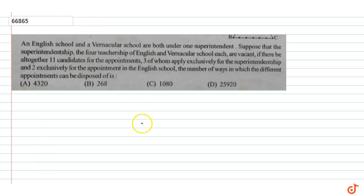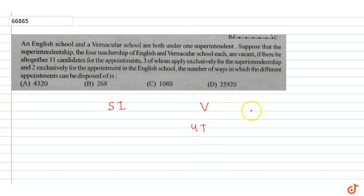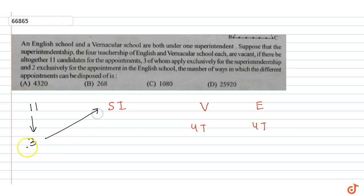So, if I can see here, how many positions are there? One superintendent, which I represent as I. How many teacherships are there? Four vernacular schools — so vernacular schools have four teacherships, and English schools have four teacherships. Now we have total 11 candidates. Three exclusively for the superintendentship. We know that the superintendentship is only under one — both schools are under one superintendent.